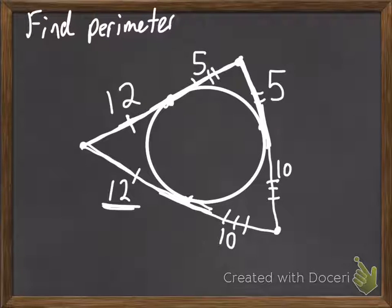Now, all we have to do is add up all the sides. So, we add up all the sides. 24, 34, 44, 54. So, the perimeter equals 54 units.